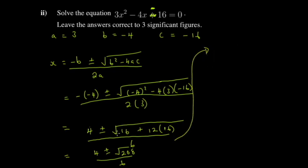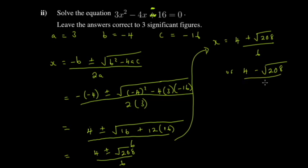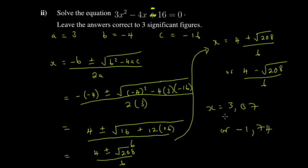So x equals (4 + √208)/6 or (4 − √208)/6. Calculating: x ≈ 3.07 or x ≈ −1.74. These are our two answers. Since the question says 'solve the equation,' you give both. If they asked for the length x, you'd take the positive value only, since length can't be negative. Thanks for watching — we'll continue with the next question.